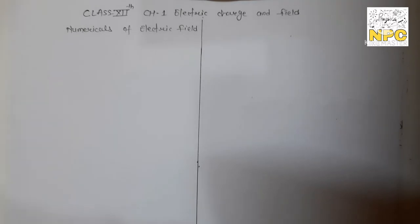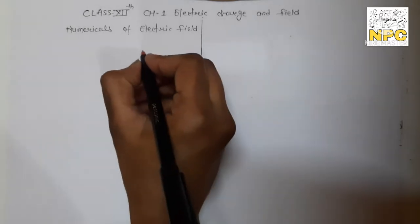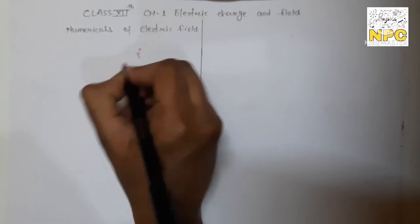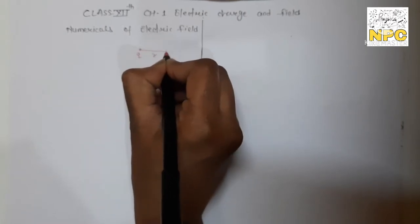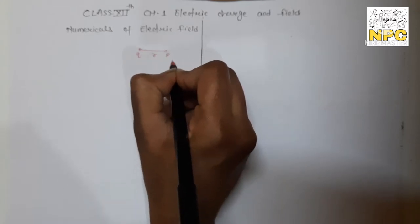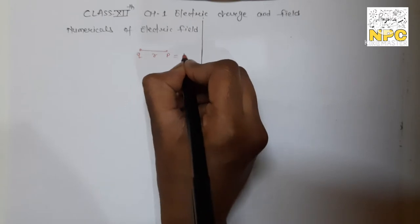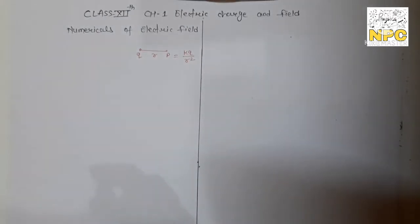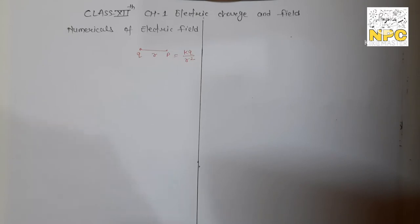First of all, let's recall what we learned in our previous video about electric field. If you have a point charge Q and you need to find the electric field at a distance r from it, then the electric field will be E = KQ/R². This formula is for the electric field due to a single point charge. But if you have more than one charge, then we use the superposition principle.